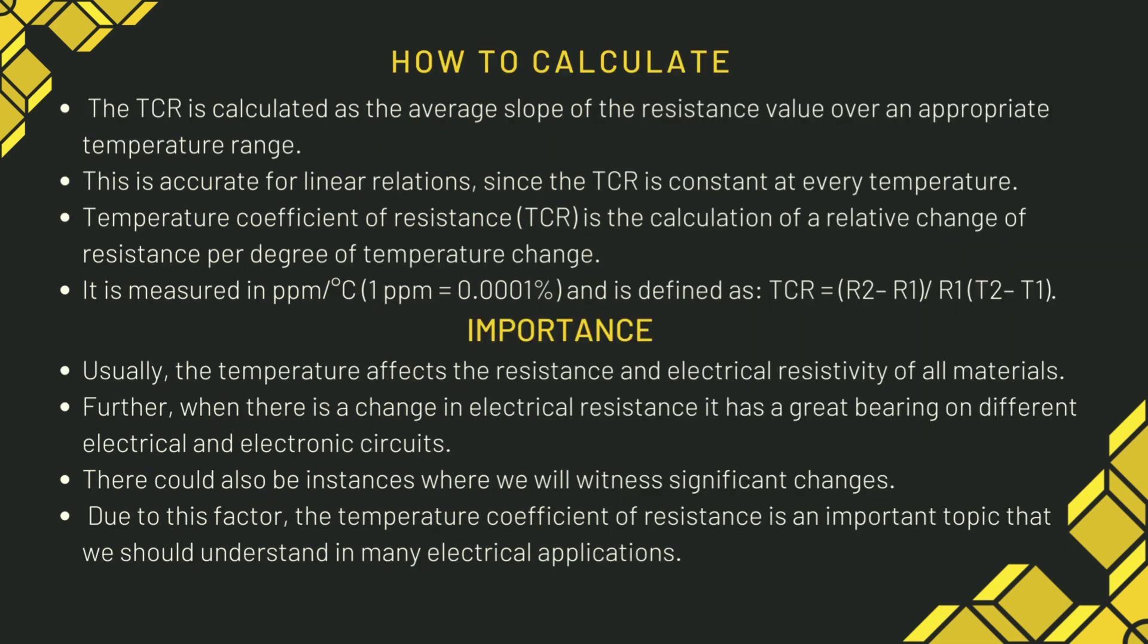How to calculate? The TCR is calculated as the average slope of the resistance value over an appropriate temperature range. This is accurate for linear relations since the TCR is constant at every temperature. Temperature coefficient of resistance is the calculation of a relative change of resistance per degree of temperature change.